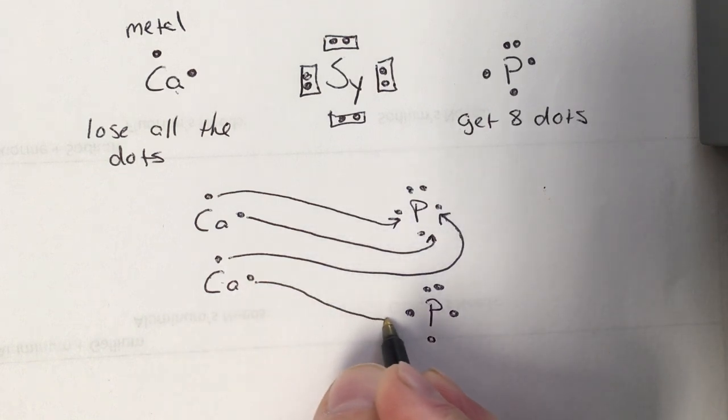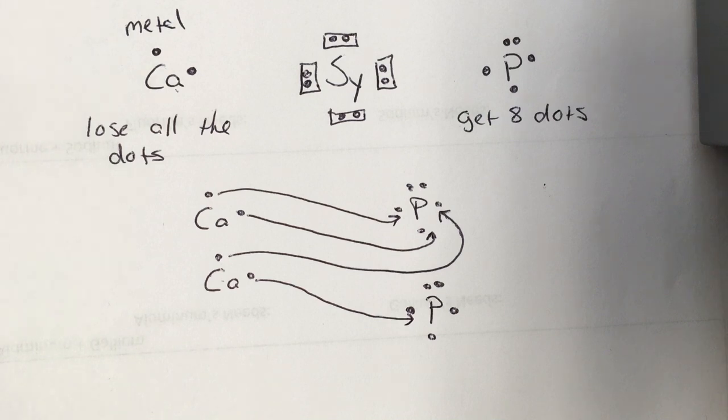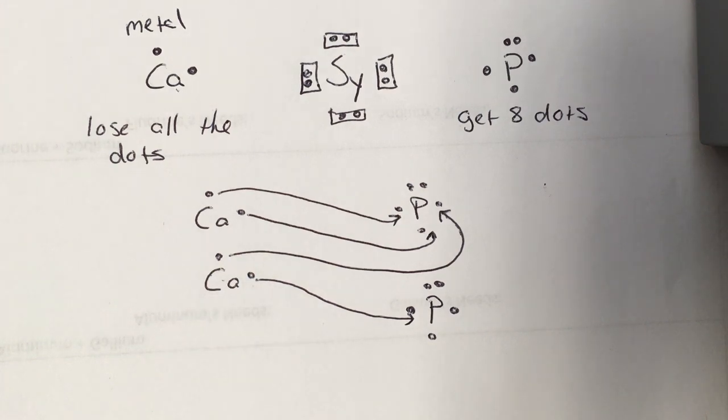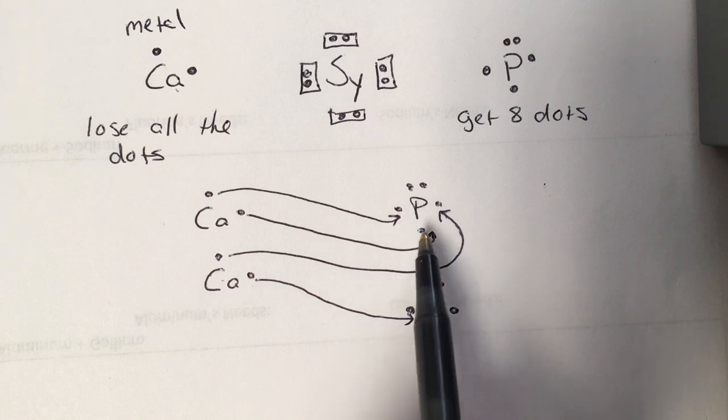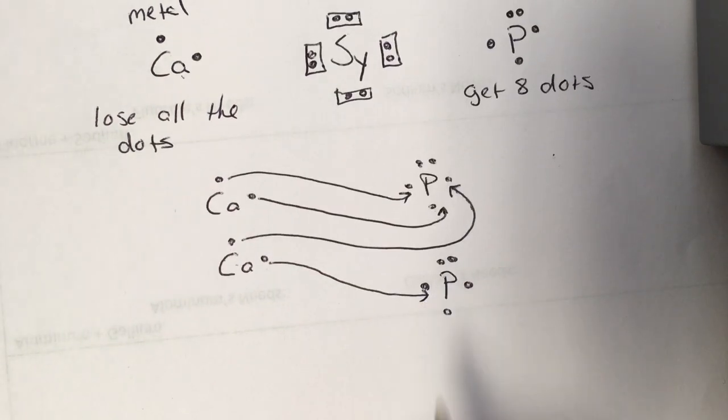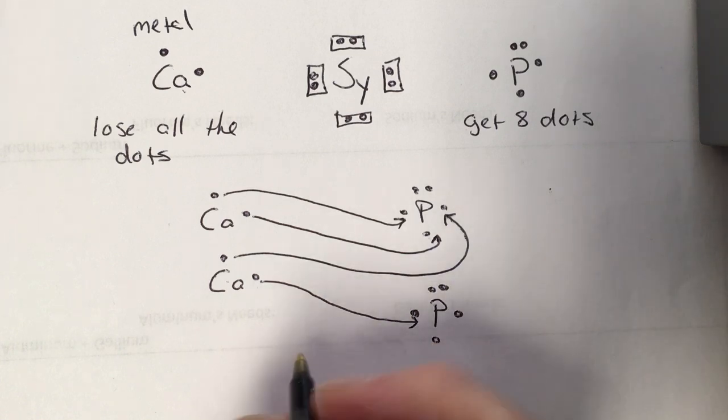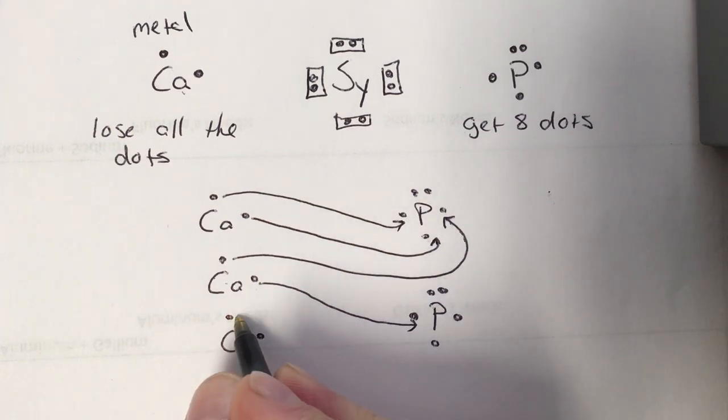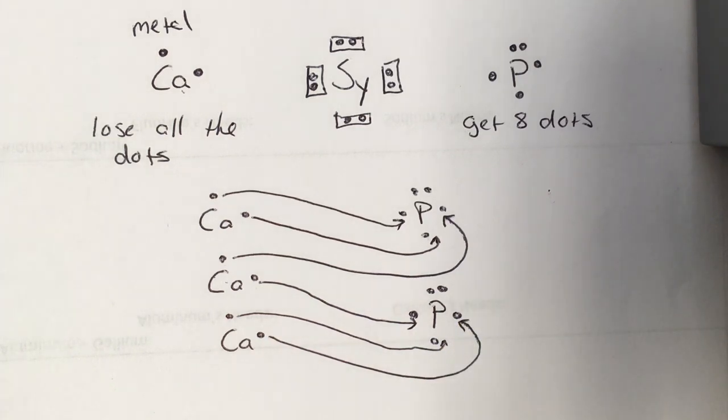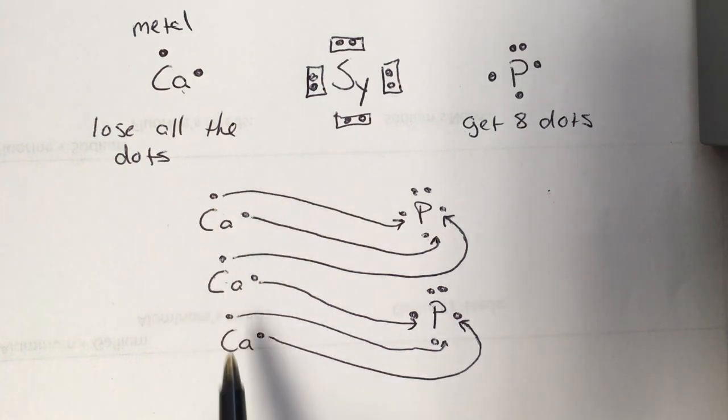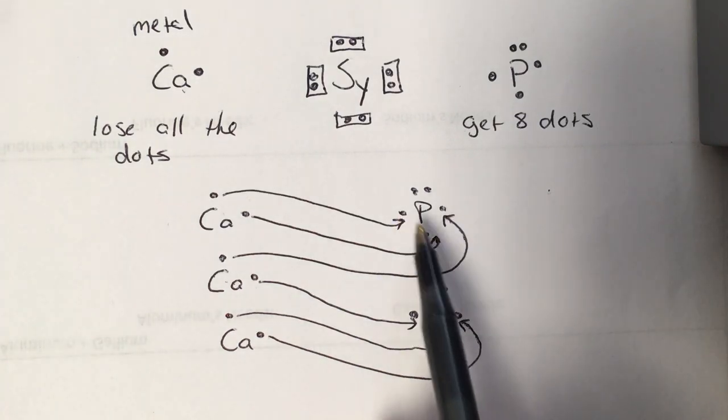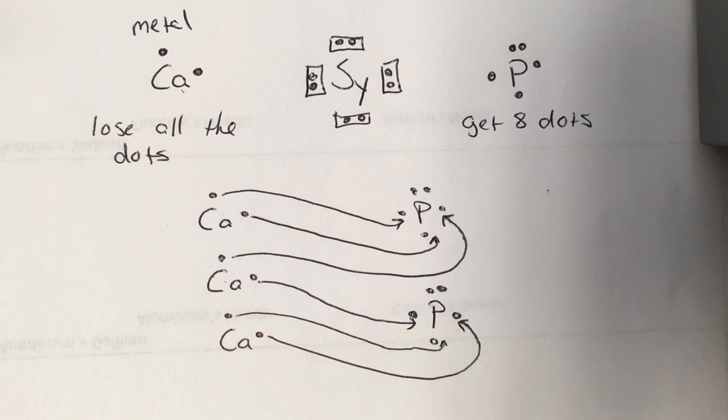And that new phosphorus atom can take that electron that the calcium needs to get rid of. And again, we reassess. Are my metals happy? That one's lost both. That one's lost both. My metals are happy. And then we assess our non-metals. This one has got the three it needs to be stable, but this one's only got one. Again, when that happens, when your non-metal needs more electrons, get yourself another metal. So we can move this one here. We can move that one there. And again, reassess. That calcium's lost everything. That calcium's lost everything. That calcium's lost everything. All my metal atoms are happy. This phosphorus has gained three. It's happy. This phosphorus has gained three. It's happy.